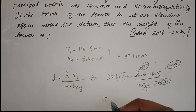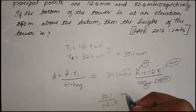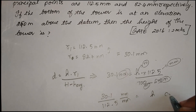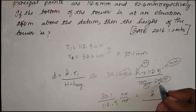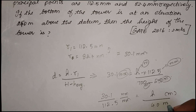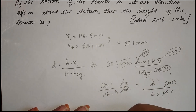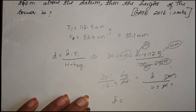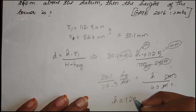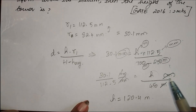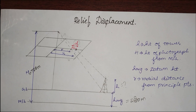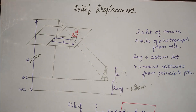Rearranging: 30.1 divided by 112.5 equals h divided by 450 meters. Solving gives the height of the tower as 120.4 meters. The millimeter units cancel, leaving the answer in meters.